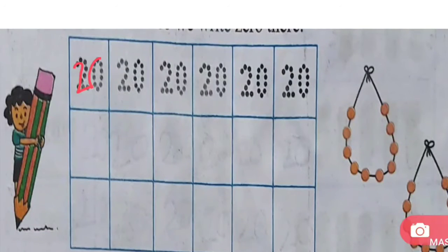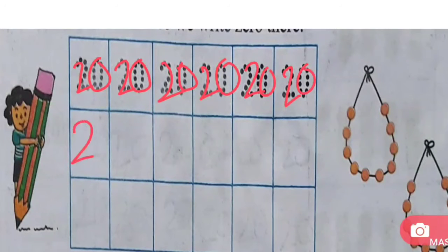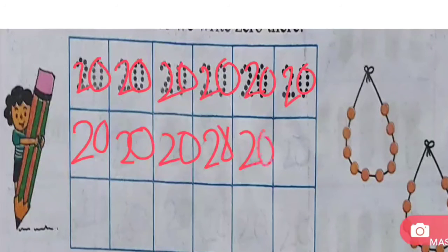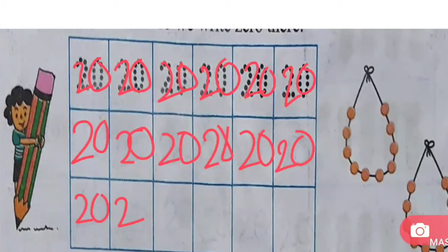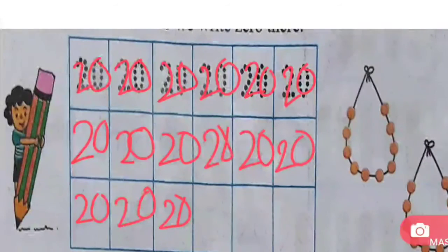2, 0, 20. 2 tens, 0 units, 20. 20, 20. 2 tens, 0 units, 20. Now you have to write: 1, 2 tens, 0 units, 20.